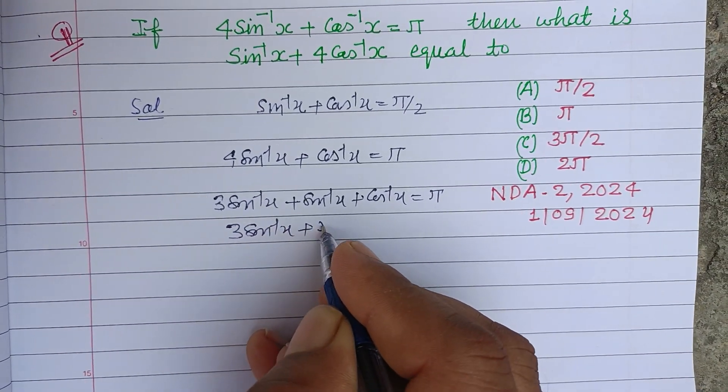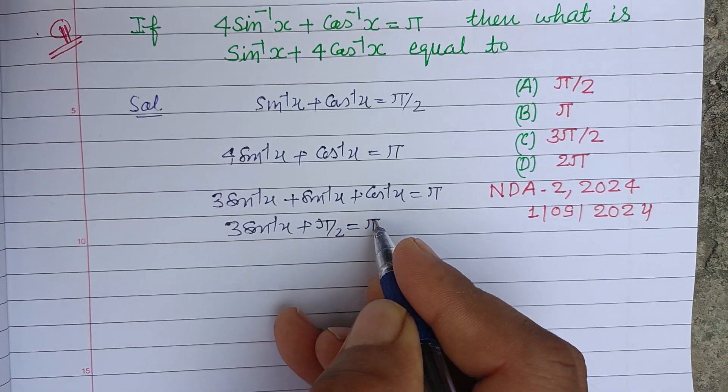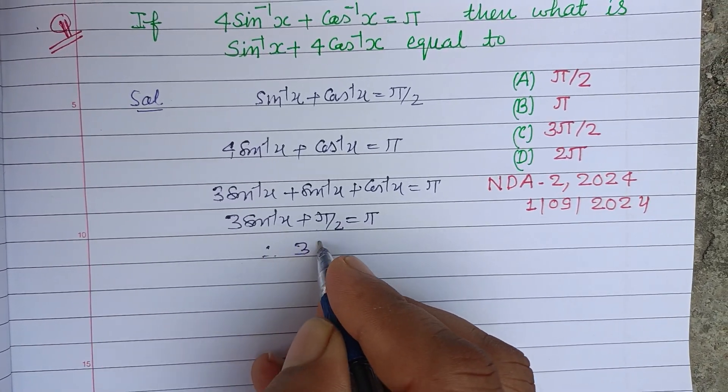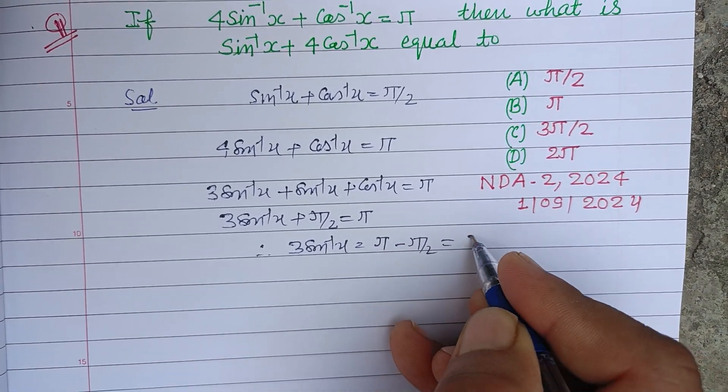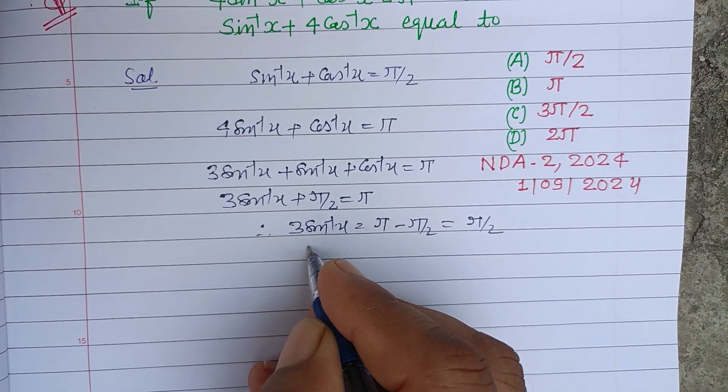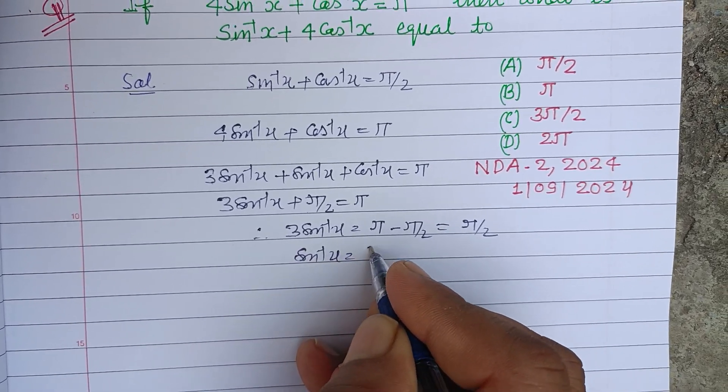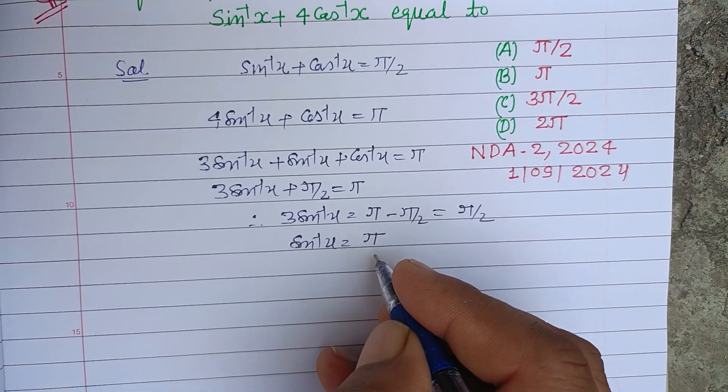So 3sin⁻¹x + π/2 = π, therefore 3sin⁻¹x = π - π/2, that is π/2. And sin⁻¹x = π/2 divided by 3, so this is π/6.